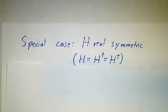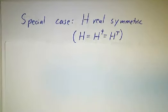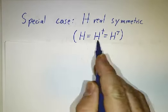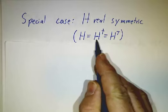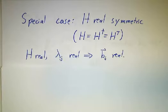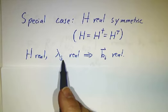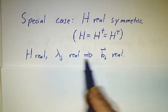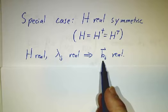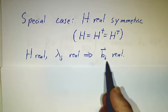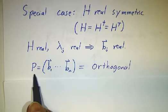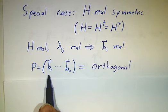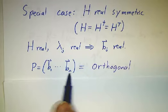Okay, now a very special case of that is when H is a real symmetric matrix. That is to say, it's Hermitian, but it's a real matrix, so transpose conjugate is just transpose. Since H is real, the eigenvalues are real, and we get the eigenvectors by row reducing H minus lambda I, and so the eigenvectors are real, and so our matrix of eigenvectors isn't just unitary, it's orthogonal because all of the vectors are real.